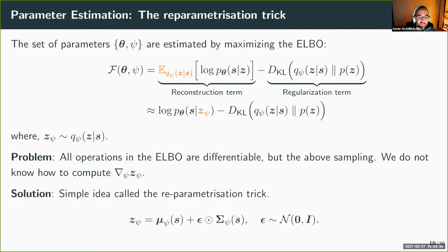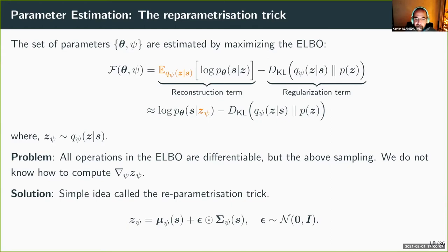The sampling operation is not differentiable, which creates a problem for backpropagation. For Gaussian distributions, we use what is called the reparameterization trick: we sample epsilon from a standard normal distribution, multiply by the square root of the variance, and add the mean. This way, the sample z_psi has the distribution q_phi but the sampling is decoupled from the parameters. Now the reconstruction term is differentiable with respect to the encoder parameters psi, enabling end-to-end training via stochastic gradient descent.